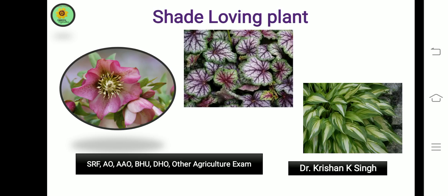Hello friends, in this video we will talk about the shade plant. A shade plant is defined as a plant that grows normally in a shaded habitat where it receives only light of low intensity.